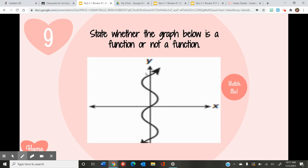So whenever I'm determining if a graph is a function, I have to perform the vertical line test. That means I'll be drawing a vertical line going up and down, and if it crosses through that line more than one time, that means that it is not a function.